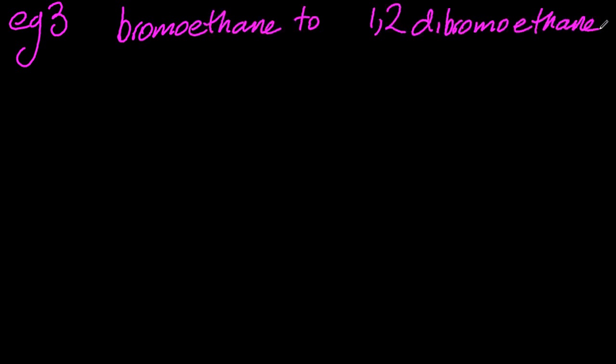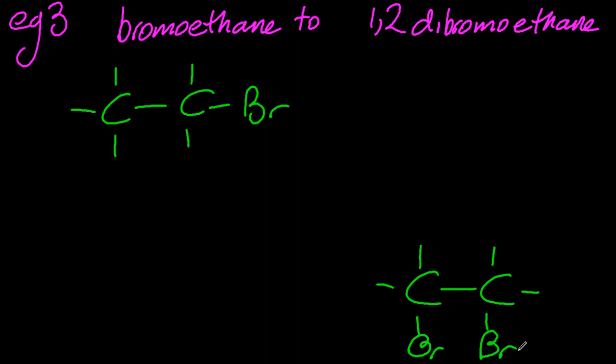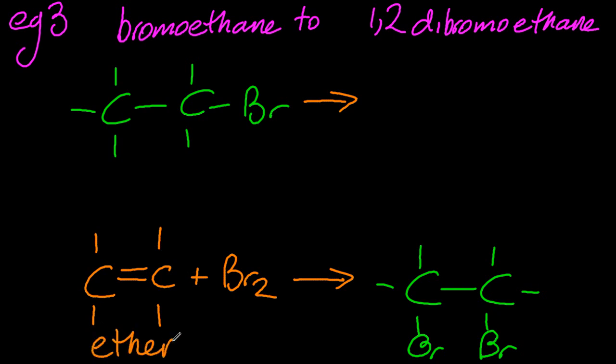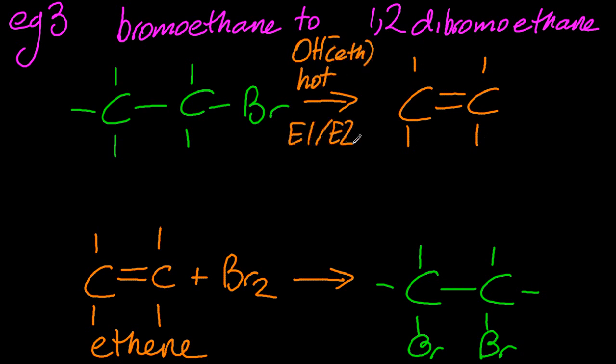Example three. Well for this one I've tried to do a bit of SL as well as HL, so bromoethane to 1,2-dibromoethane. I'm going to try a different way this time. Let's draw out the first thing and the last thing. So how am I going to link those two together with two steps maximum? Well the only way I know how to make dibromoethane is that reaction there. So back calculating, yeah I need to do that E1, E2, hot hydroxide in ethanol reaction.